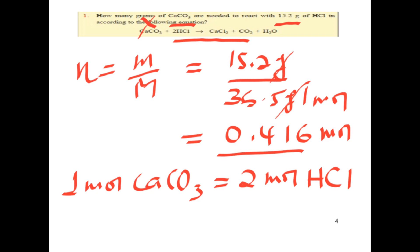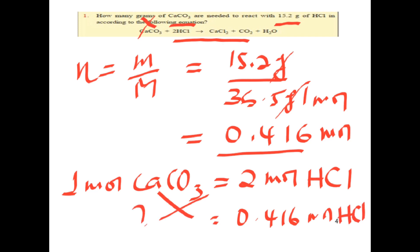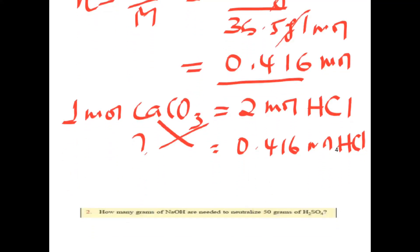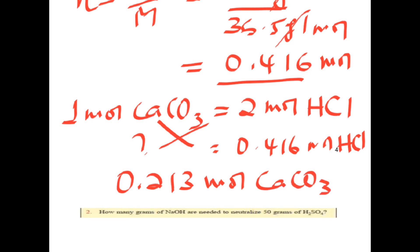If you have 0.416 moles of HCl, then the moles of calcium carbonate needed: 0.213 moles of calcium carbonate is needed.